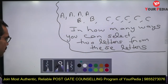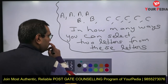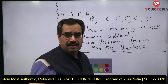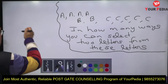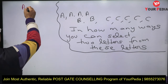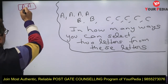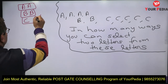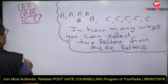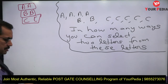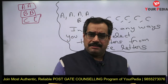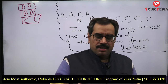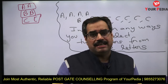So how will you answer? We have to choose two letters. One approach: take both letters identical. If you take both letters identical, you can have AA — that is one selection. Then BB and CC. So if you want to choose both letters identical, these are the three selections only: AA, BB, CC.